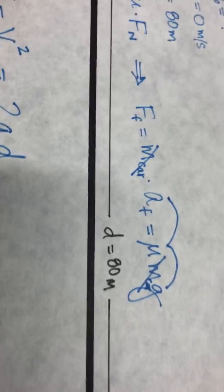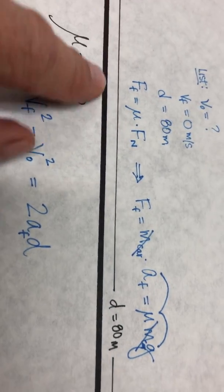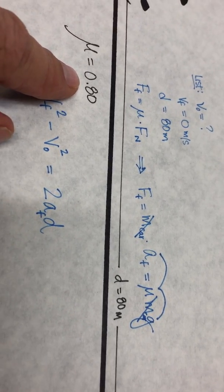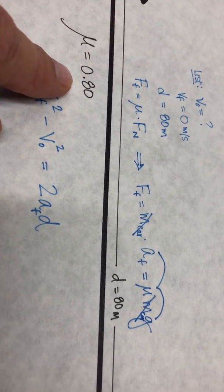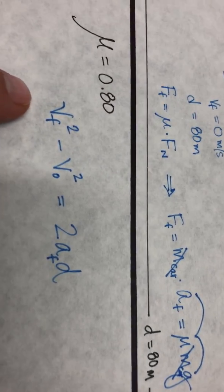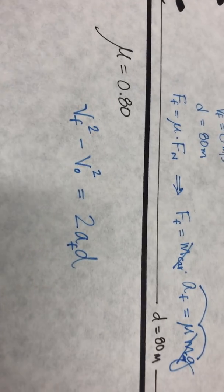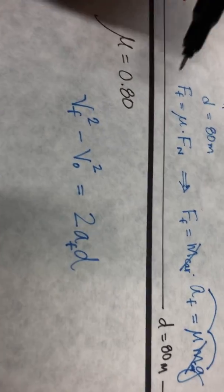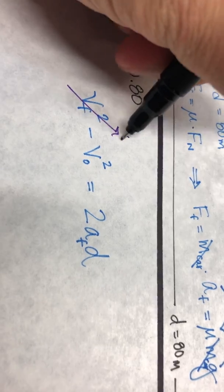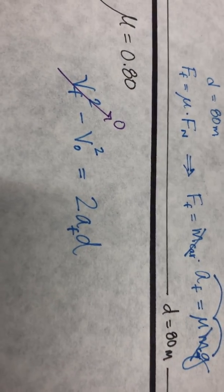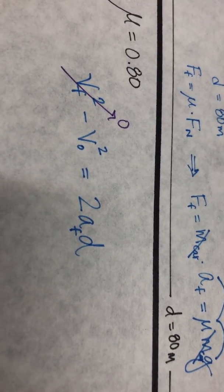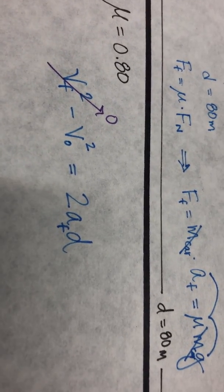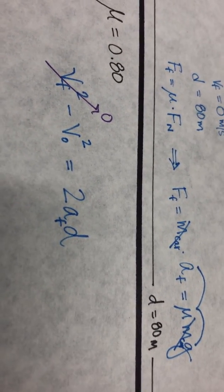Since the car skids 80 meters and the coefficient of friction between the tires and the road is 0.8, we can use the equation: v_final squared minus v_initial squared equals 2 times the acceleration due to friction times d. Plug in those numbers, square, and do what you've got to do.